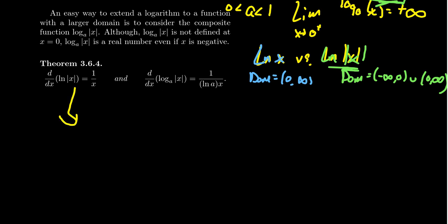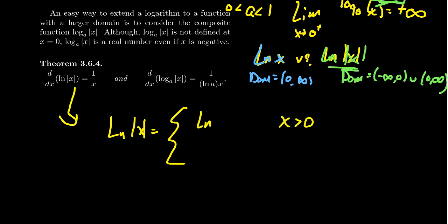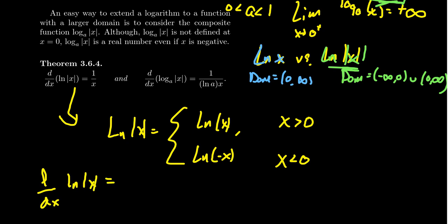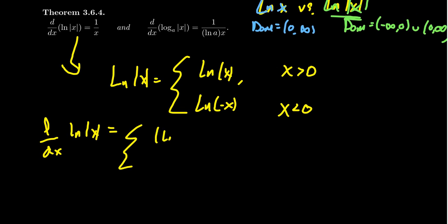Let me explain why extending the domain doesn't affect things here. If you take the natural log of the absolute value of x, we can treat this like a piecewise function. When x is greater than zero, it's no different than the natural log of x. But when x is less than zero, if the number is negative, multiplying by negative one makes it positive. So this function behaves like the natural log of negative x. When you take the derivative — d/dx of ln|x| — using these same domains, for x greater than zero we take the derivative of ln(x), which is 1 over x. For x less than zero, we take the derivative of ln(−x).